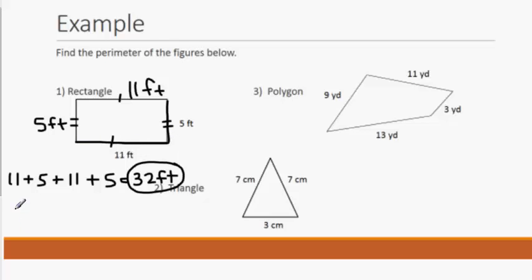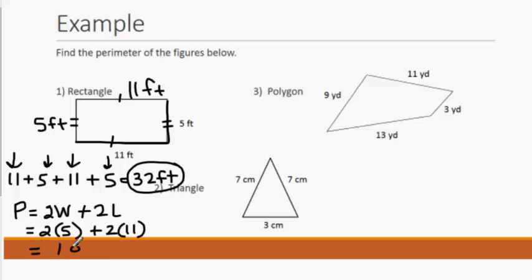Now you also may have seen a formula where perimeter is 2 times the width plus 2 times the length. And if you think about that, that's really what we just did right here. We did 2 times the length and 2 times the width. This is a formula that you can use. If we do 2 times the width and then 2 times the length, we will get the same answer of 32 feet.